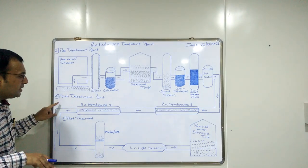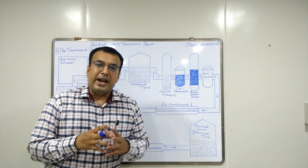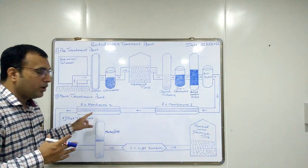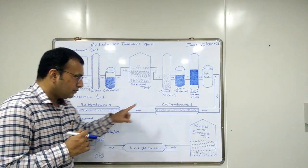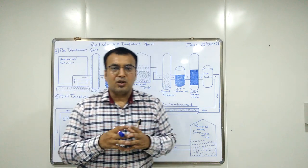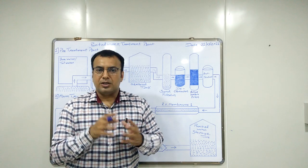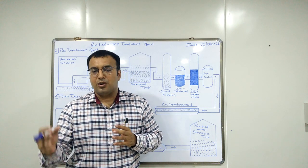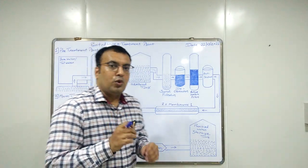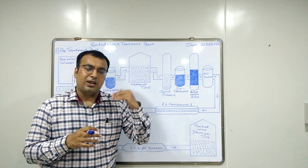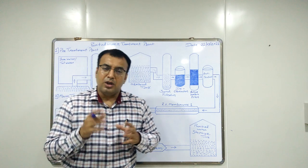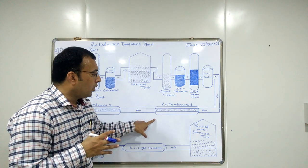Now we move to the second part: main treatment. In this main treatment there is the RO unit. Many facilities install one RO unit or two RO units for getting better quality of water. These RO units have a membrane filter with a pore size of approximately 0.0003 micron, and the molecule size of water is 2.75 angstrom.